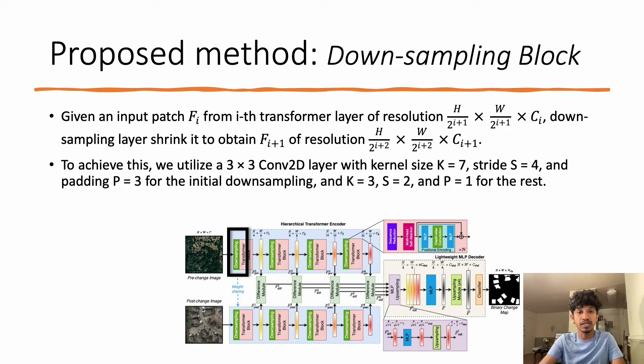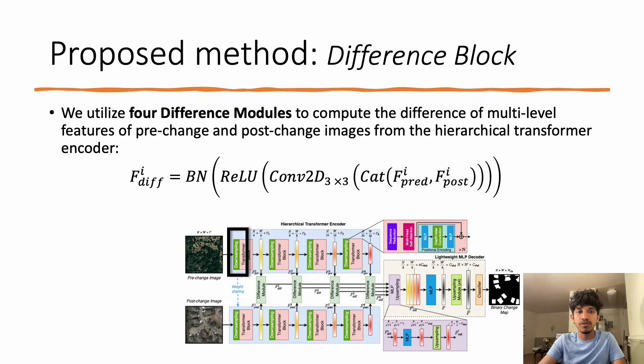We utilize four difference modules to compute the difference of multi-level features of pre-change and post-change images from the hierarchical transformer encoder. More precisely, our difference module consists of Conv2D, ReLU, and BatchNorm2D. Instead of computing the absolute difference of pre-change and post-change image features, the proposed difference module learns the optimal distance metric at each scale during training, resulting in better change detection performance.